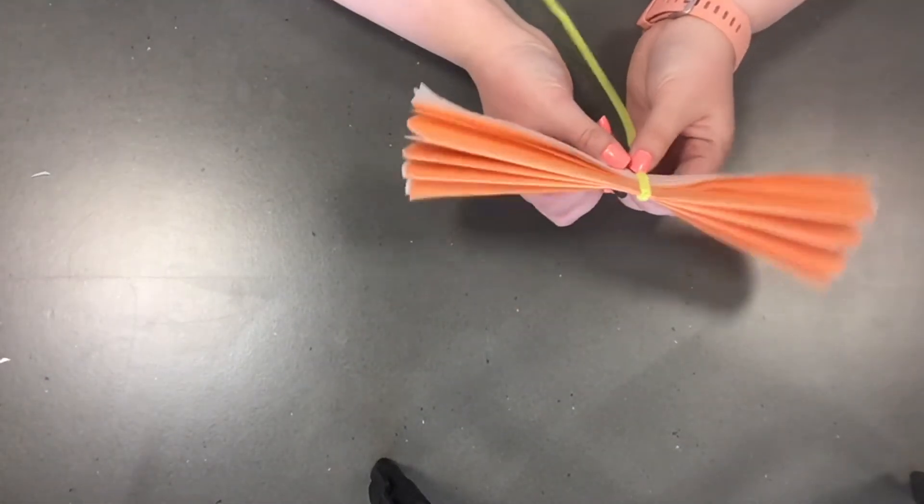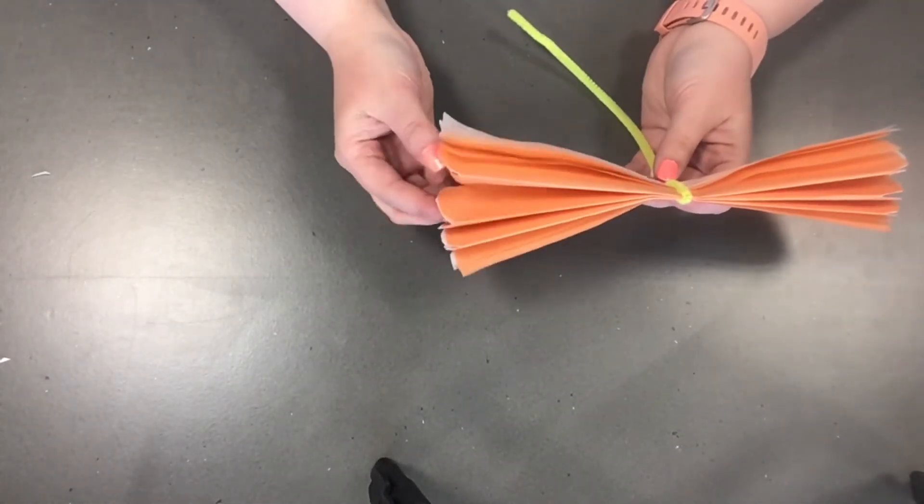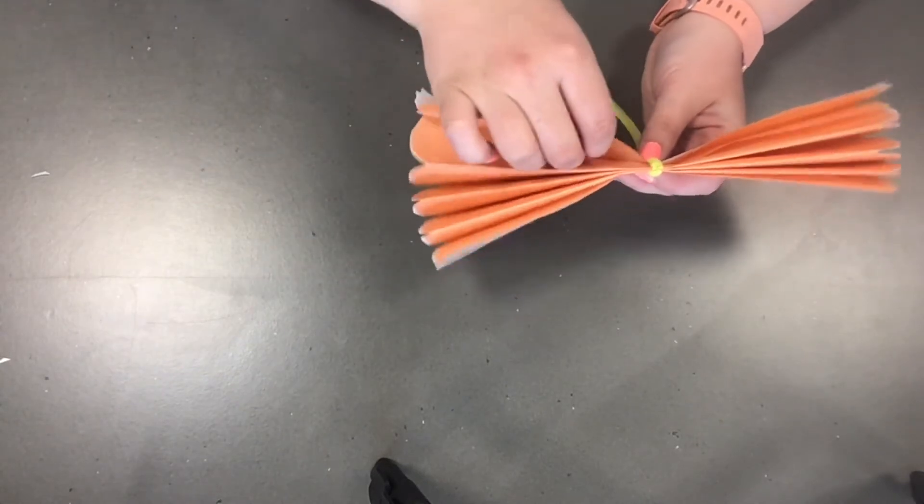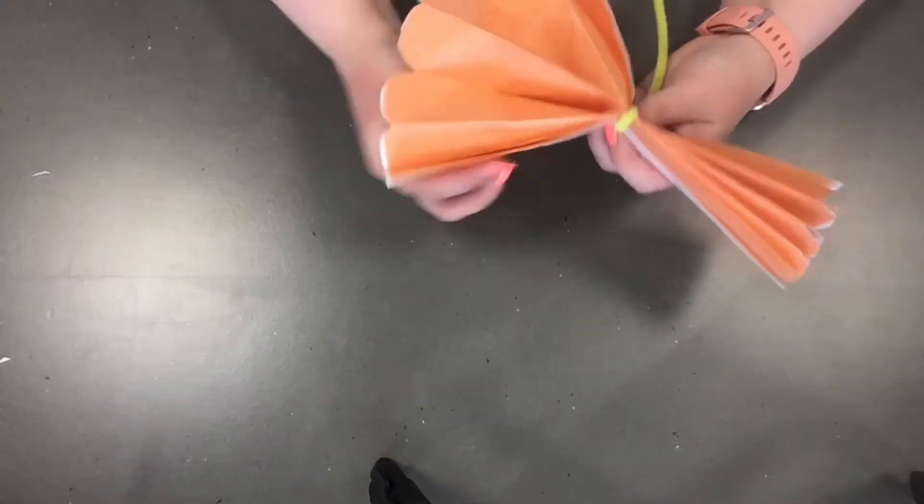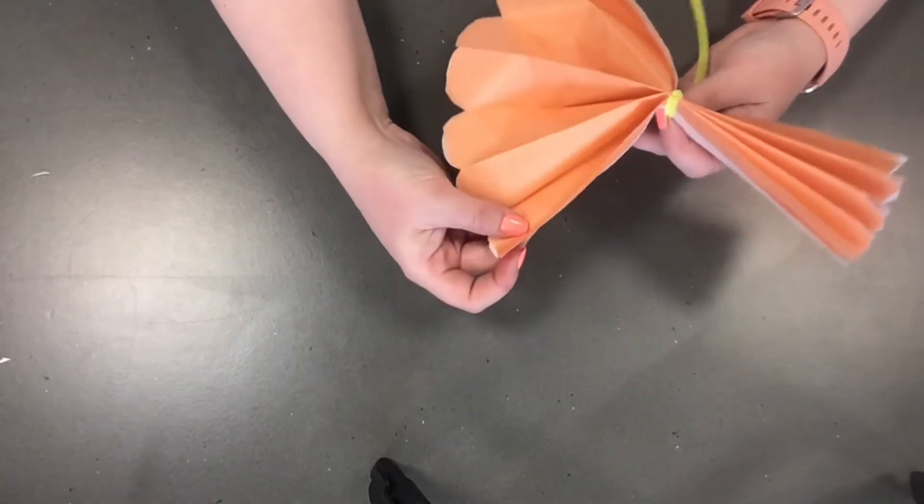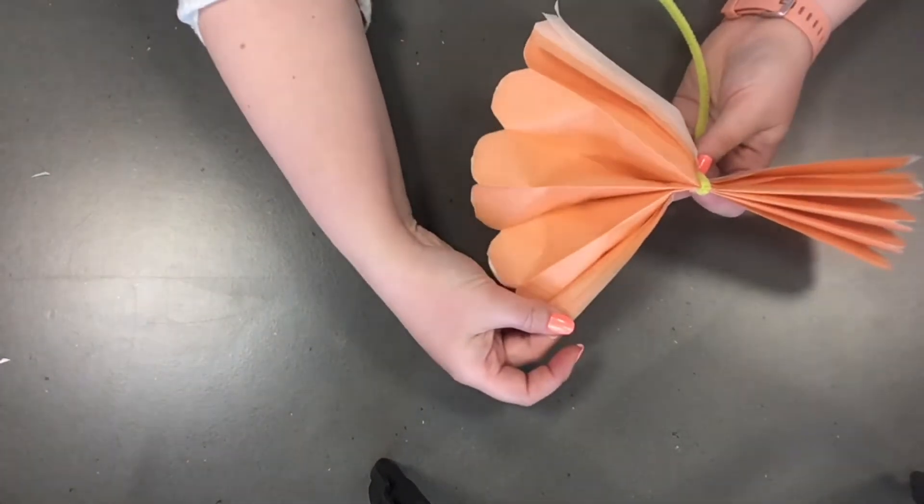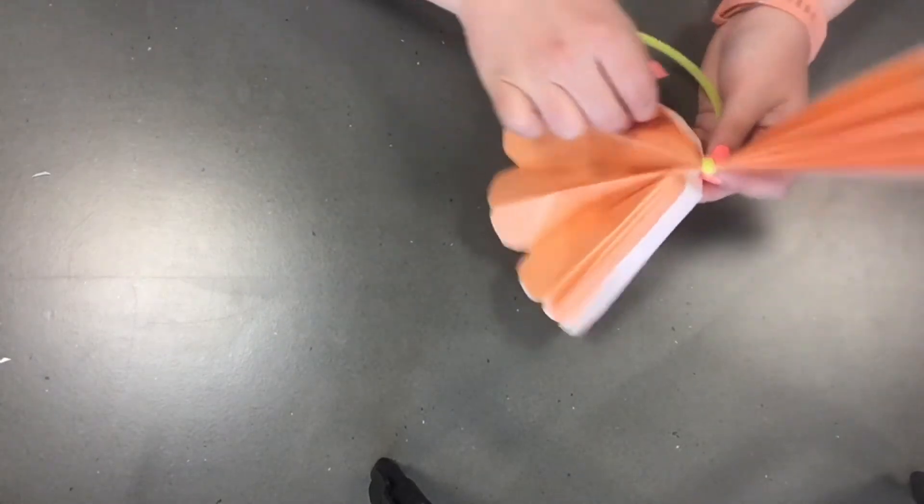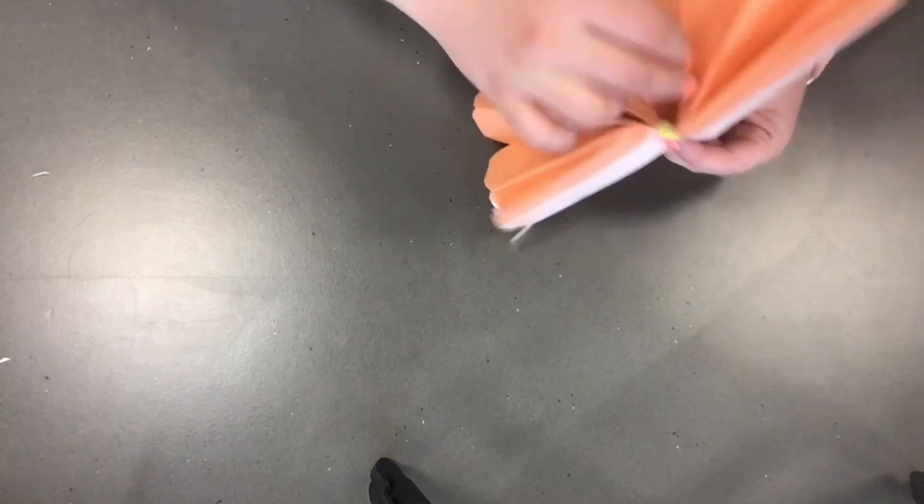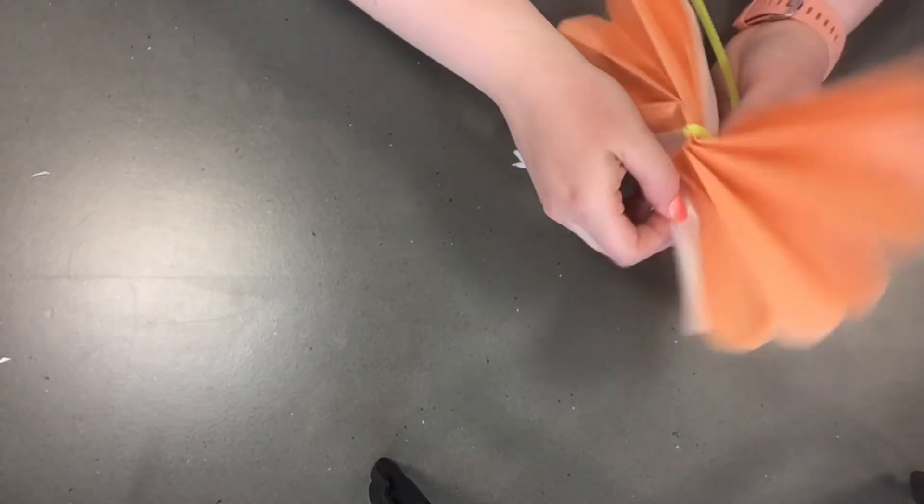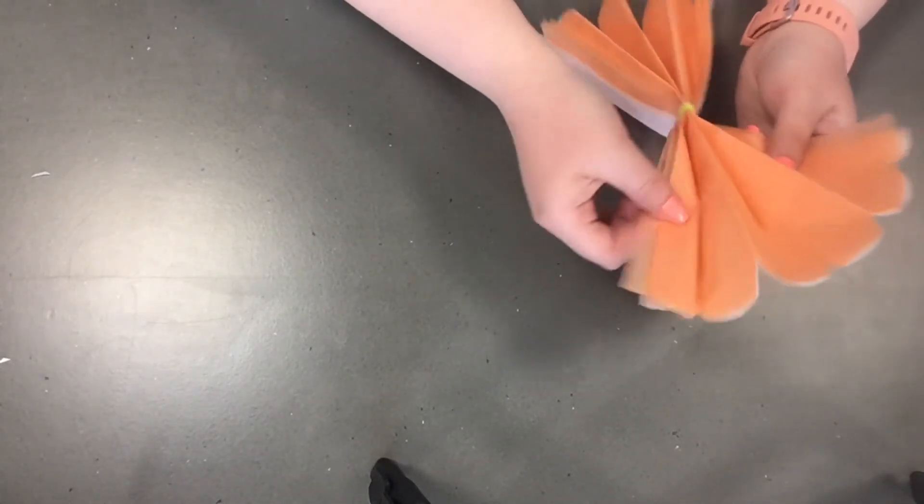So now we have our shapes cut out for our petals. So now what we're going to do is we're going to actually spread out our flower petals like this. Kind of pull it apart so you can kind of see those petal shapes that we made at the ends. And what we're doing right here is we're just separating it so that we'll be able to pull them apart a little easier. Just kind of pull them apart like that.